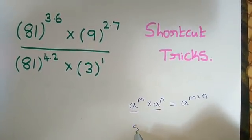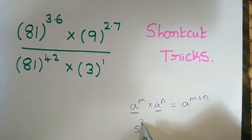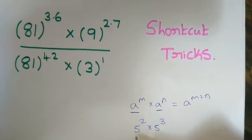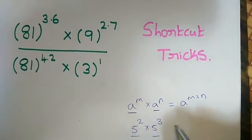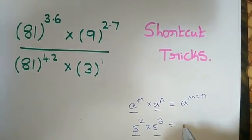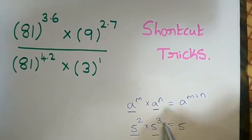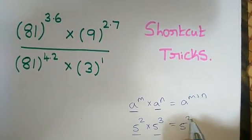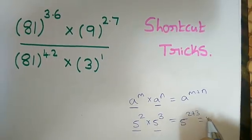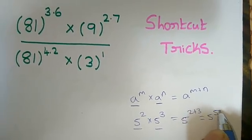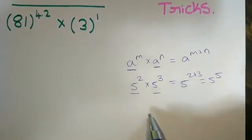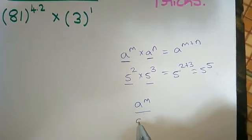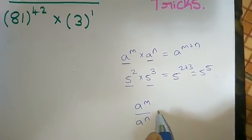For example, 5 power 2 into 5 power 3. Keep the base 5, so 5 power 5 is the result. If the bases are equal to 5, we add 2 plus 3, so 5 power 5 is the answer.